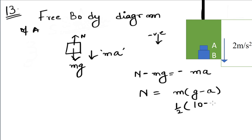After solving, we get normal reaction to be 4 N. Therefore, normal reaction exerted on block A by block B is 4 N.